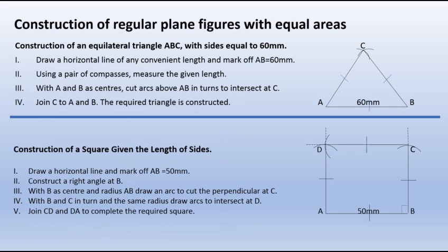With that understanding, let's move on to the next subtopic: construction of regular plane figures with equal areas. To construct an equilateral triangle ABC with side equal to 60 millimeters, first draw a horizontal line of a convenient length and mark AB to be 60 millimeters. Use a compass to measure 60 millimeters on the ruler. With A as center, draw an arc; likewise with B as center, draw another arc. At the point of intersection, label it C, then join C to A and B. That gives us our equilateral triangle with all sides equal.